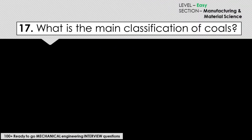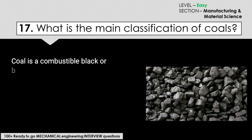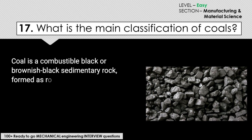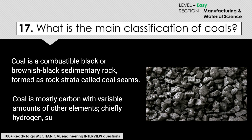What is the main classification of coal? Coal is a combustible black or brownish-black sedimentary rock, which is formed as rock strata called coal seams. Coal is mostly carbon with variable amounts of other elements, chiefly hydrogen, sulfur, oxygen, and nitrogen.